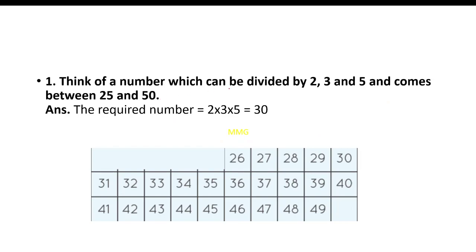Moving to the next page. The question is: think of a number which can be divided by 2, 3, and 5 and comes between 25 and 50. First you have to write all the numbers that come between 25 and 50. Note that you don't have to write 25 and 50 themselves — only the numbers in between. Then you have to choose a number divisible by 2, 3, and 5.